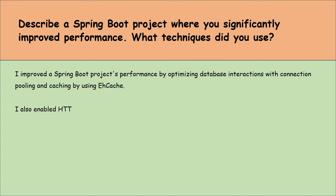What are the basic annotations that Spring Boot offers? Spring Boot offers several basic annotations. @SpringBootApplication is a key annotation that combines @Configuration, @EnableAutoConfiguration and @ComponentScan, setting up the foundation for a Spring Boot application. @RestController and @RequestMapping are essential for creating RESTful web services, allowing us to define controller classes and map URL paths to methods. @Service and @Repository mark the service and data access layers respectively, promoting separation of concerns. @Autowired enables dependency injection, automatically wiring beans. These annotations are crucial in reducing boilerplate code, speeding up development and maintaining clear architecture.